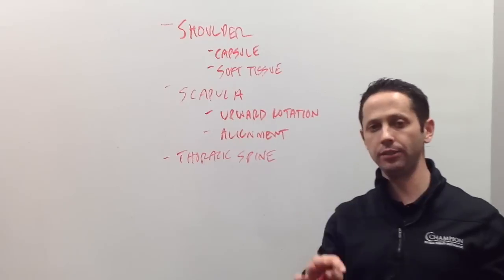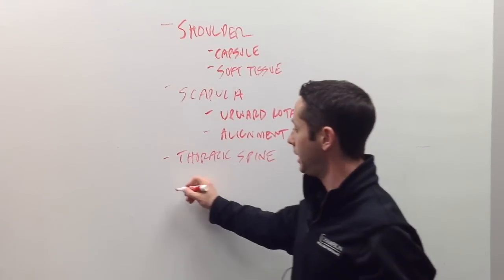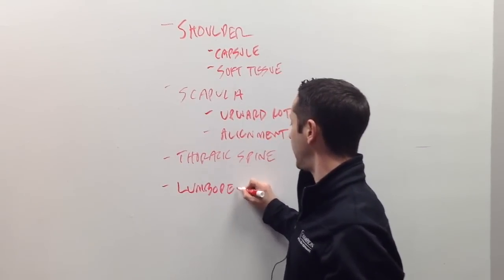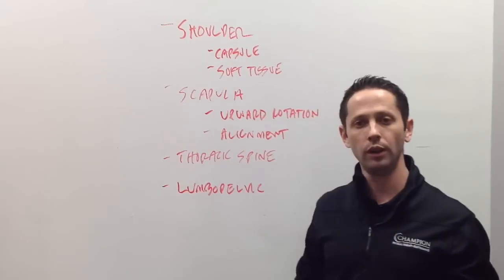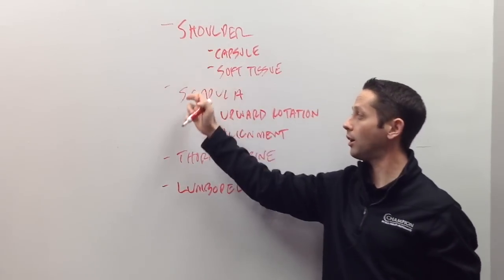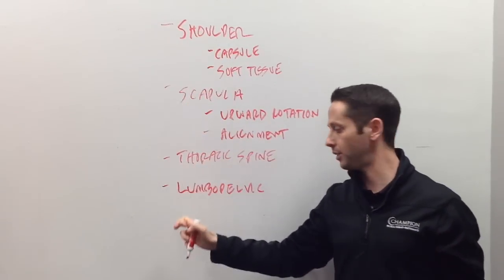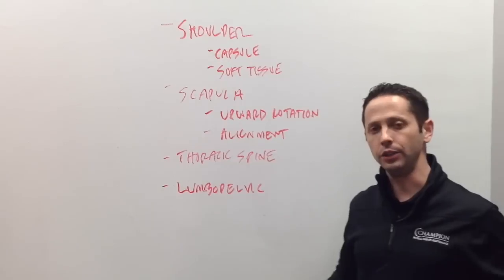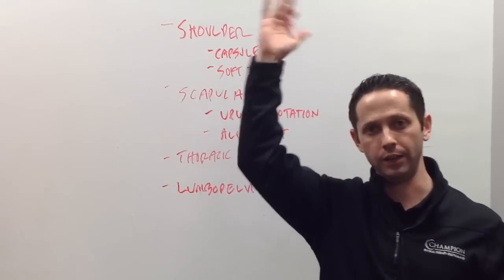The fourth thing is probably the least popular thing that people look at, but it's actually lumbopelvic control. Or what I mean by that is essentially core control. Now we talked about loss of mobility at the first three areas. But if you have poor lumbopelvic or core control at this area, you could also have poor overhead shoulder mobility.